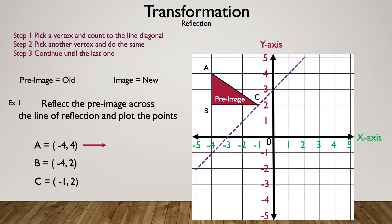We pick vertex A and start counting diagonally — that's one, as you can see with the light blue line. Continuing: we're at two, and now two and a half. We've counted to the diagonal line. Now let's count across the diagonal line on the opposite side: half, one and a half, and two and a half.